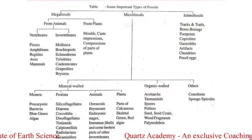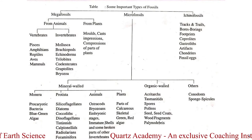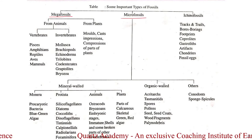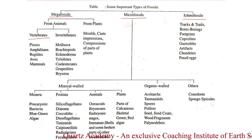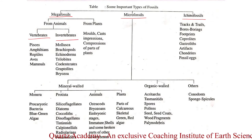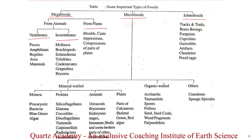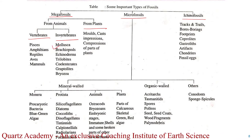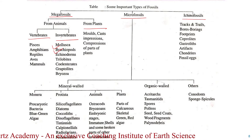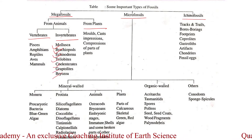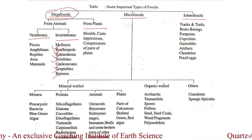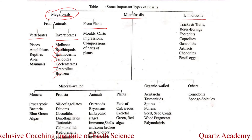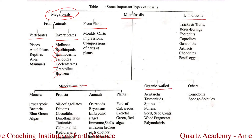Let's see which animals or phyla come under these three mega types — Megafossil, Microfossil, and Ichnofossil. All vertebrates and invertebrates, which we are going to see in upcoming lectures, come under Megafossil. Like Phylum Mollusca, Phylum Brachiopoda, Phylum Echinodermata, Trilobita, Coelenterata, Graptolyta, and Bryozoa. In case of Microfossils, we have mineral wall, organic wall, and others. The mineral wall is further divided into genera like Monera, Protista, animals, and plants.